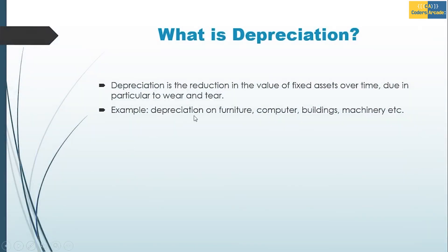What is Depreciation? Depreciation is the reduction in the value of fixed assets over time, due in particular to wear and tear. Examples include depreciation on furniture, computer, buildings, machinery, etc. In other words, if you purchase any asset, the value of that asset will decrease year by year — that is called depreciation.